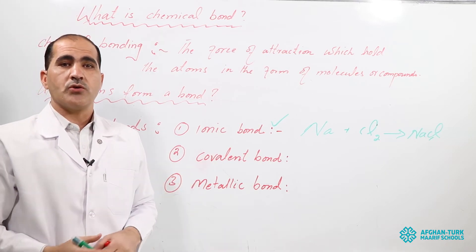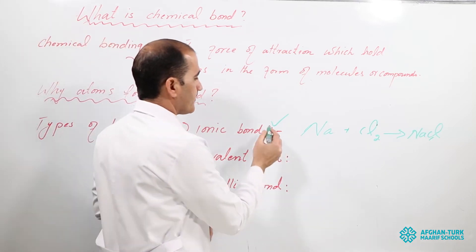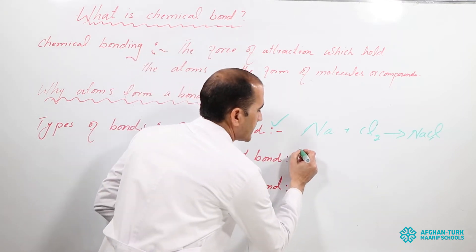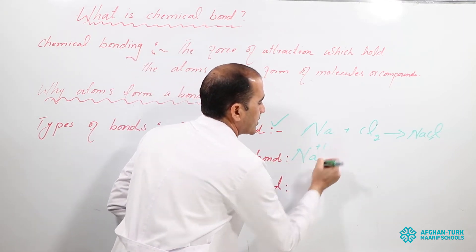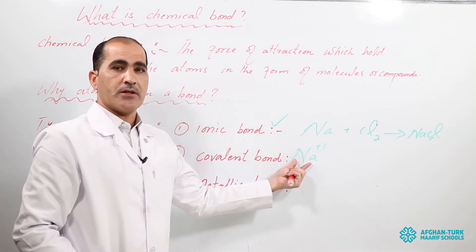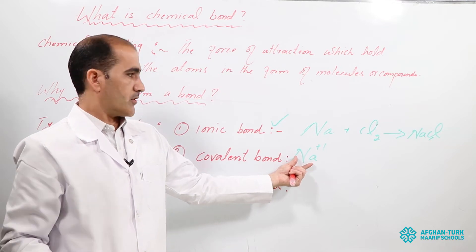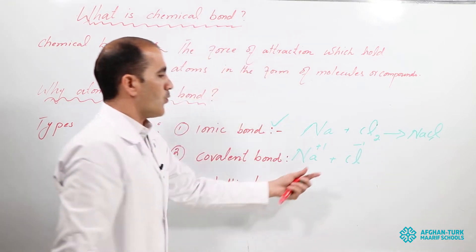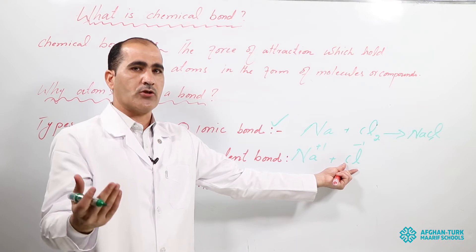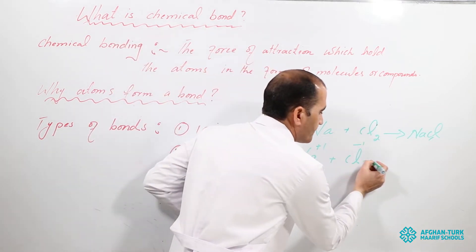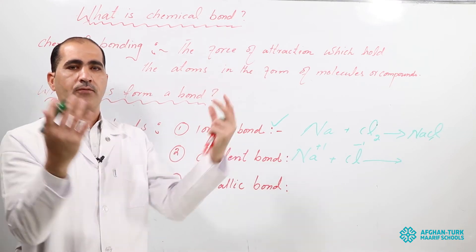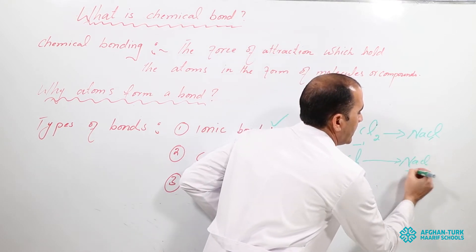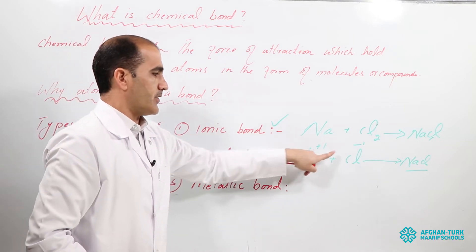In other words, you can also define ionic bonds as the force of attraction between cations and anions. The metal sodium carries a plus one charge — we call it a cation, meaning positive charged particle. Chlorine carries a minus one charge — we call it an anion, meaning negative charged particle. Positive and negative have a force of attraction, and when they attract each other, sodium chloride NaCl is formed. Opposite charges attract each other.